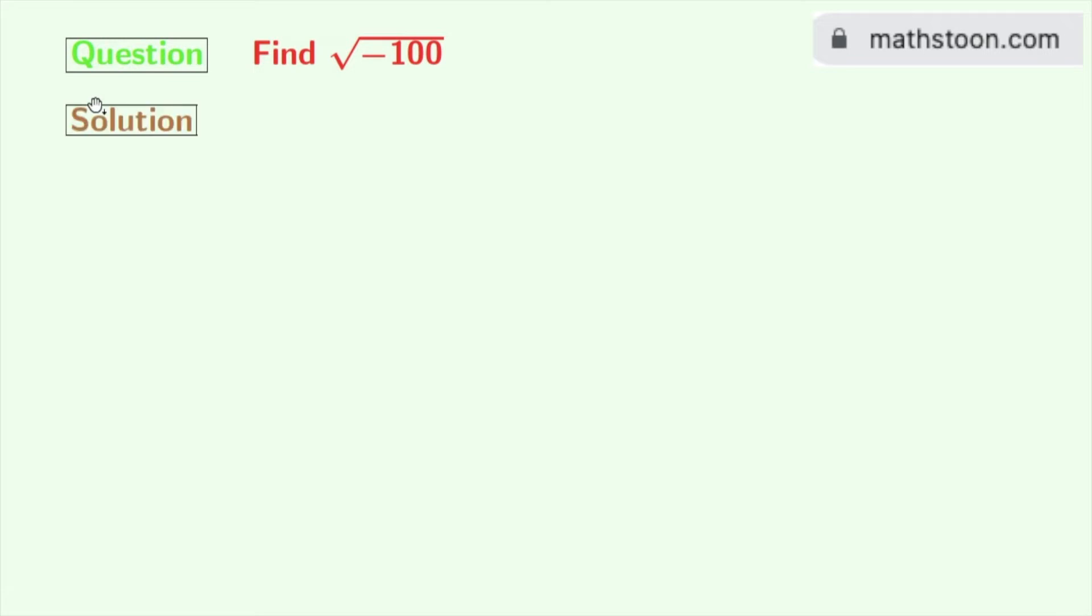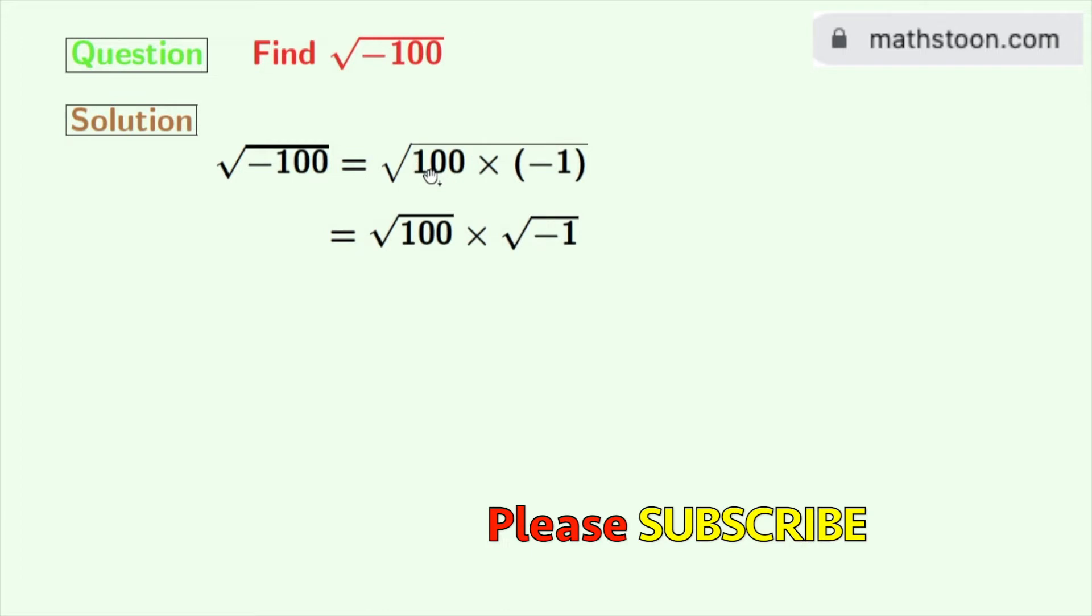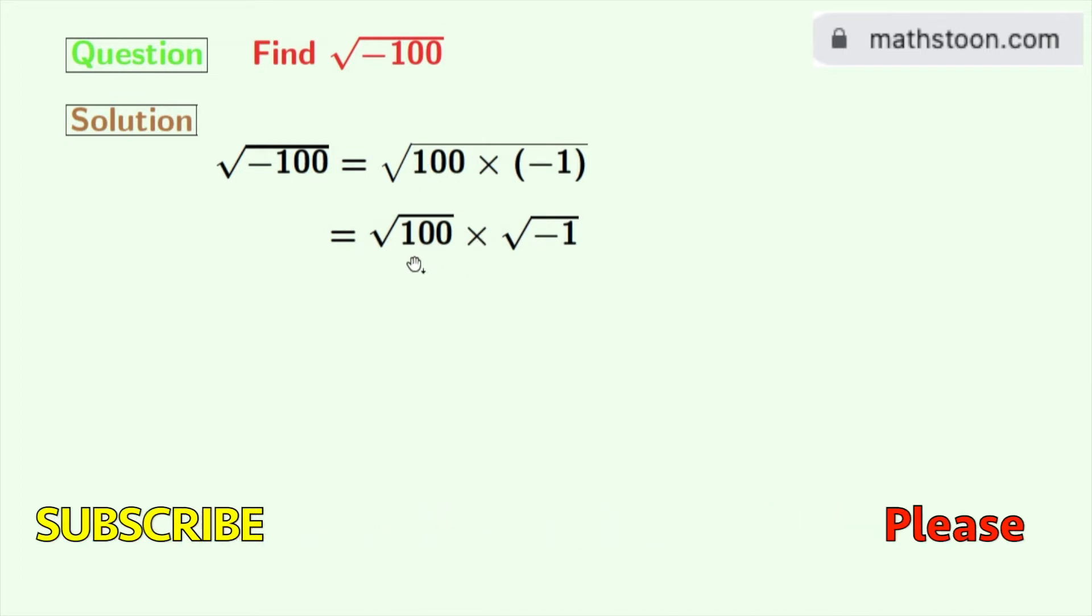Now let's start. This is square root of minus 100. Now we will rewrite this as square root of 100 times minus 1. Now this can again be written as square root of 100 times square root of minus 1.